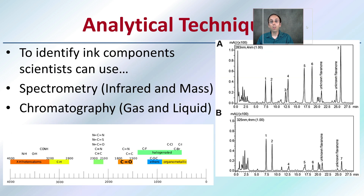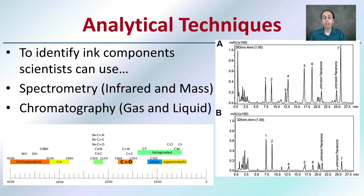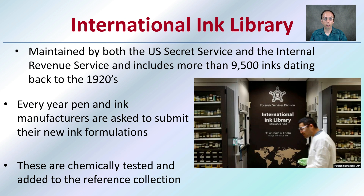Looking at more technical terms, to identify ink components, scientists can use infrared, mass spec, or chromatography in both the gas or liquid phase. This can help determine a signature for that ink — what particular components and ingredients are being used to specifically identify that one particular ink.